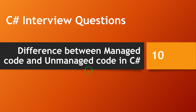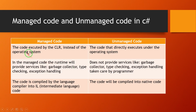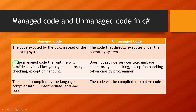In this session, we will learn the difference between managed code and unmanaged code in C#. Managed code is the code executed by the CLR instead of the operating system. Unmanaged code is the code that directly executes under the operating system. In managed code, the runtime provides services like garbage collection, type checking, and exception handling.